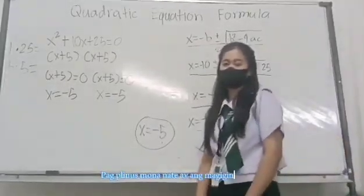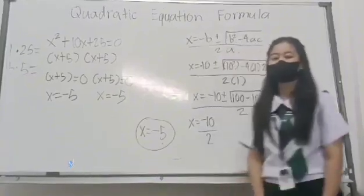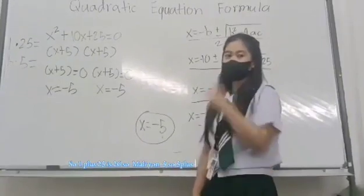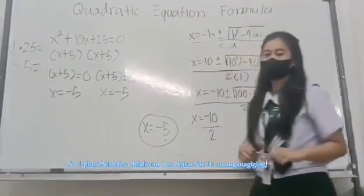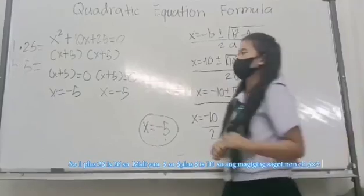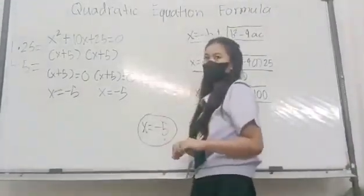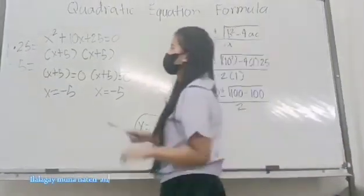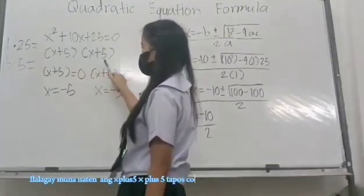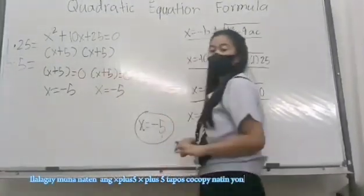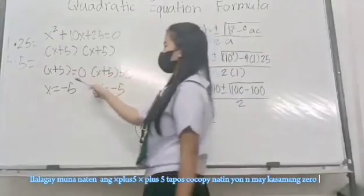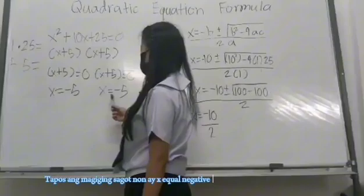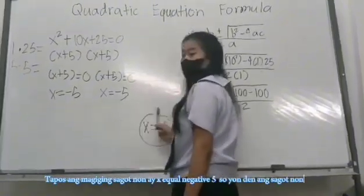So, we'll add first, x equals negative 10. So 1 plus 25 is negative 6. Then we multiply, and 5 plus 5 is 10, so what we get is 5 times 5. So we'll substitute x plus 5 times x plus 5, then we'll equate this to zero. Then the answer will be x equals negative 5. So the same answer.